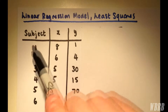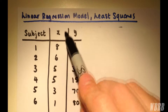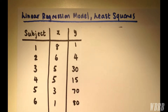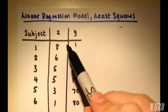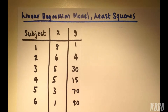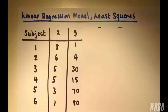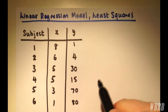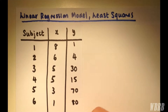So here's our question. We have six subjects with variables x and y. The first thing we're going to do is find the mean value for x and the mean value for y. We do that by adding all the values for x up and dividing by how many there are — six. So we have 8 + 6 + 5 + 5 + 3 + 1, divided by 6, and we get x̄ = 4.7. Similarly for y, ȳ = 33.3.